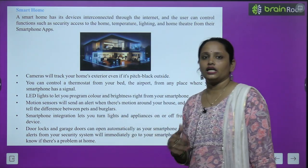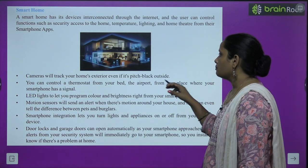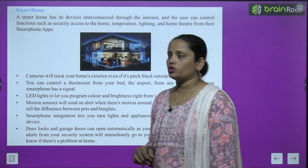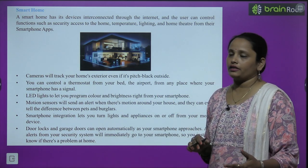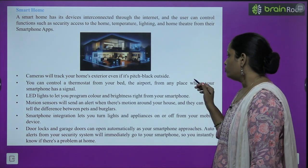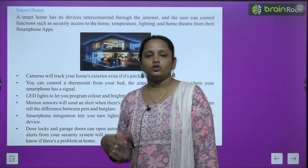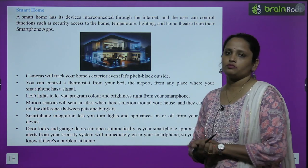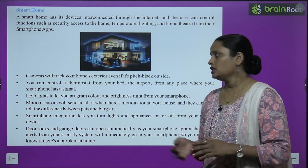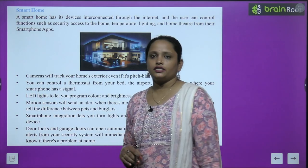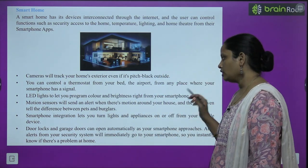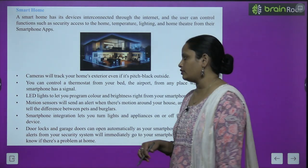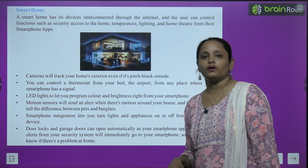अब इसमें क्या होता है — जो cameras हैं वो track करते हैं आपके बाहर के घर का exterior। Even if it's pitch black outside, ये cameras उसे capture कर लेते हैं। You can control a thermostat from your bed — बेड में आराम से बैठे बैठे आप thermostat को भी control कर सकते हैं — from any place where your smartphone has a signal। LED lights let you program color and brightness right from your smartphone। Motion sensors send alerts when there is motion around your house।